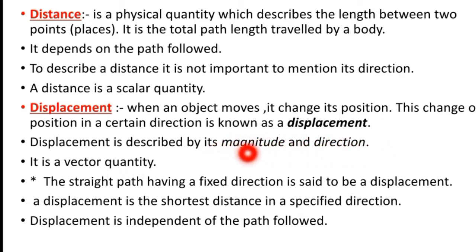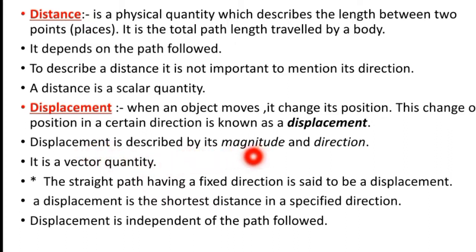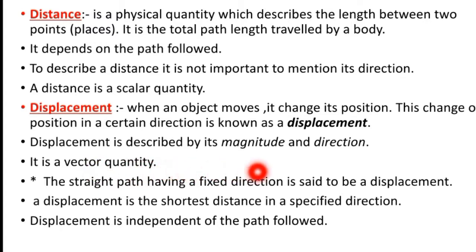Displacement is described by its magnitude and direction, so it is a vector quantity. The straight path having a fixed direction is said to be a displacement.